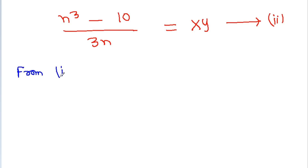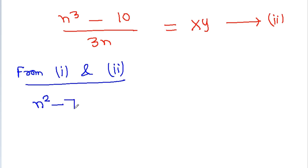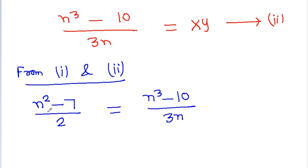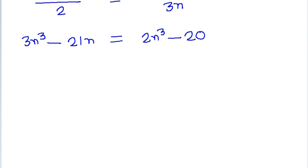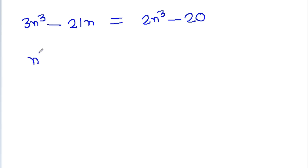From equation 1 and equation 2 we can say that (n squared minus 7) divided by 2 equals (n cubed minus 10) divided by 3n. Cross-multiplying: 3n cubed minus 21n equals 2n cubed minus 20, which gives us n cubed minus 21n minus 20 equals 0.